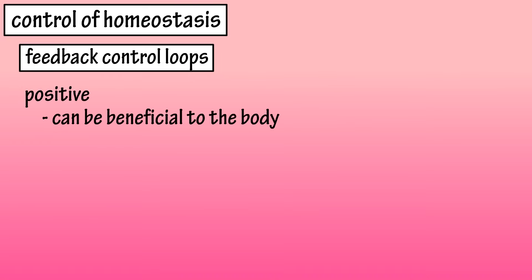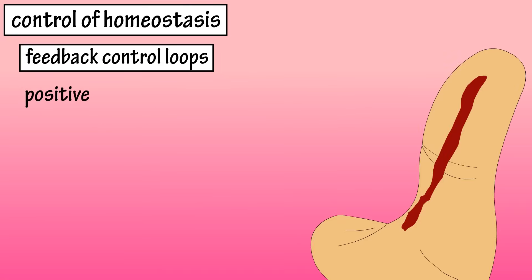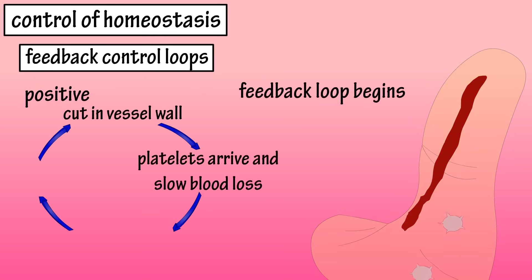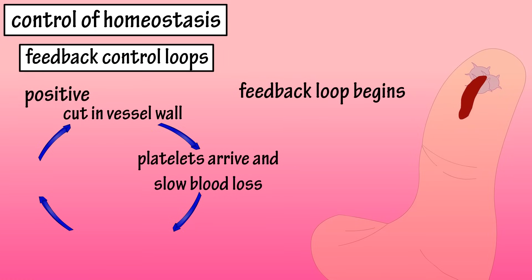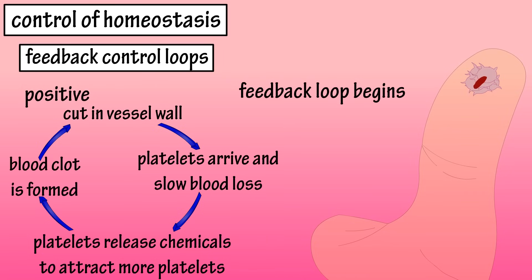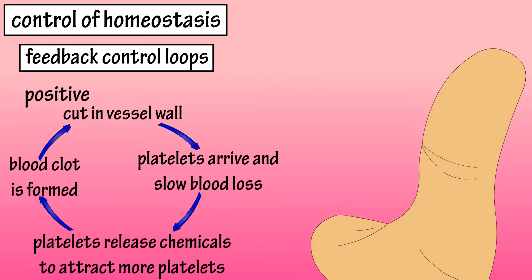In a couple of instances, positive feedback control loops can be beneficial to the body. For example, if someone gets a cut in a blood vessel wall, a positive feedback control loop begins, and platelets — which are floating around in circulating blood — recognize the damaged area and begin to stick together to slow the loss of blood and patch up the tear in the wall. They also release chemicals that attract more platelets to the area to help stop the blood loss. Eventually, a blood clot is formed, the loss of blood is kept to a minimum, and the positive feedback loop ends.